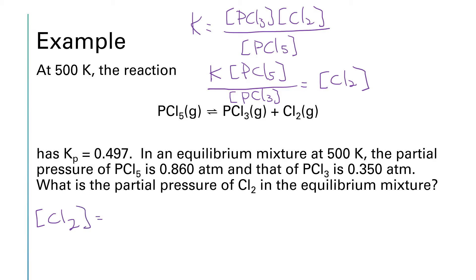So chlorine is going to be equal to K times PCl5 divided by PCl3. So now I can just substitute the numbers in for this. K is 0.497, PCl5 was 0.860, and PCl3 is 0.350. And if I run this in my calculator, we've got 0.497 times 0.86 divided by 0.35, and that's going to give us a value of 1.22.